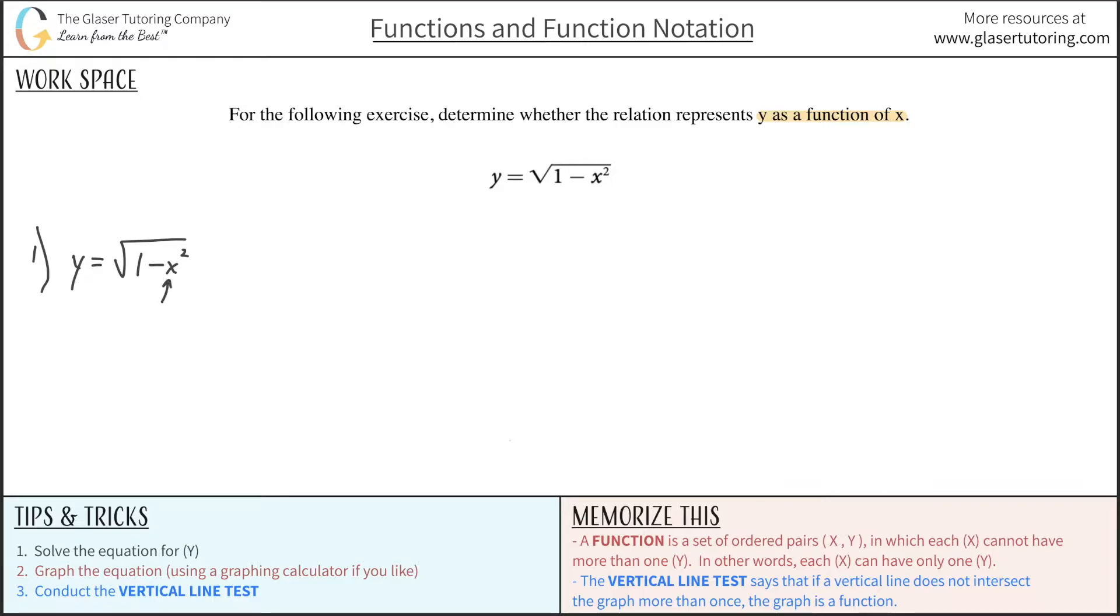x cannot be greater than 1, because if x here were 2, let's say you plugged in 2, it'd be 1 minus 2 squared, which is then 1 minus 4, which is then square root of negative 3, and what is that exactly?